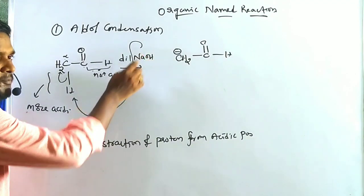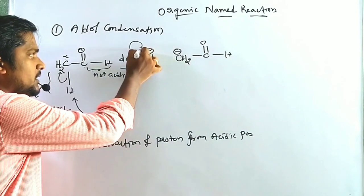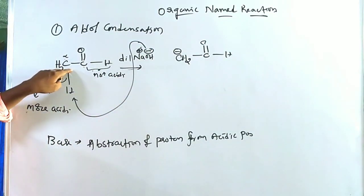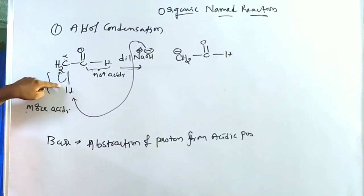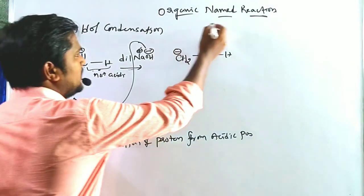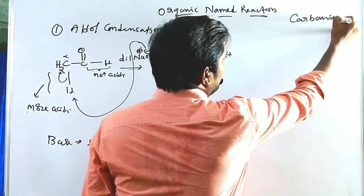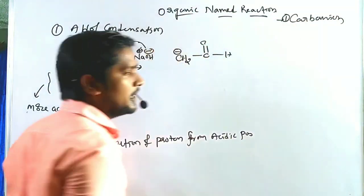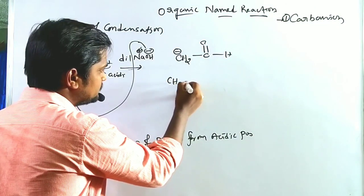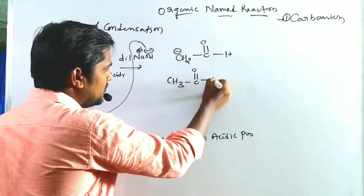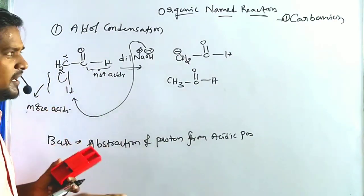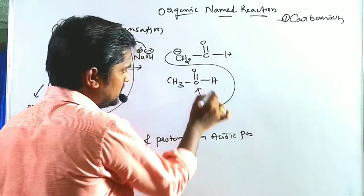The base abstracts the proton from the acidic carbonyl compound. The bonded electrons shift toward the carbon atom, forming a carbanion — a carbon negative ion. This carbanion is the reactive intermediate in the reaction. It acts as a nucleophile and undergoes nucleophilic addition reaction on another carbonyl compound — another molecule of the same compound.